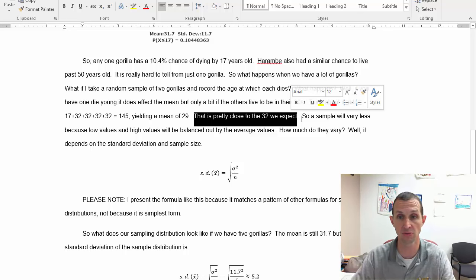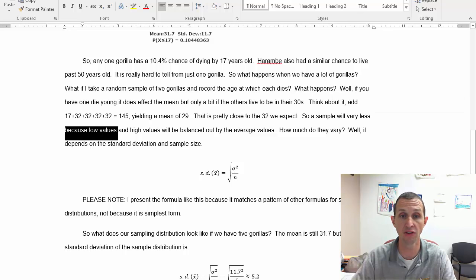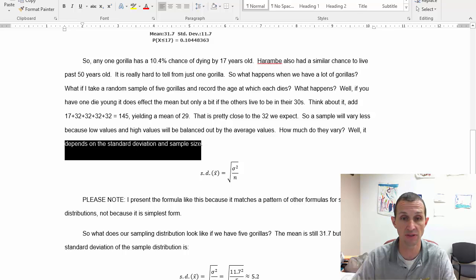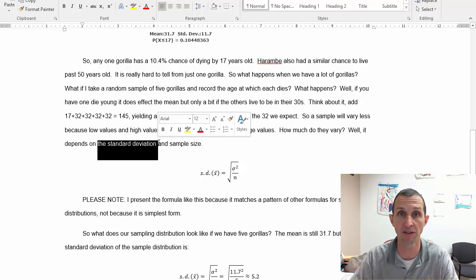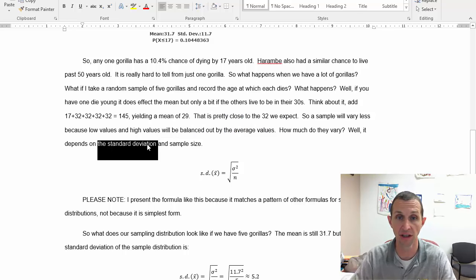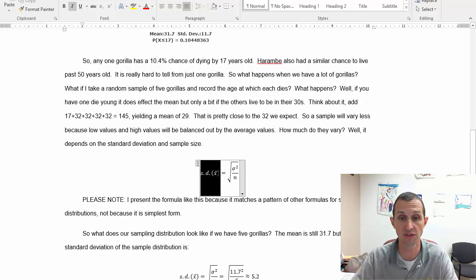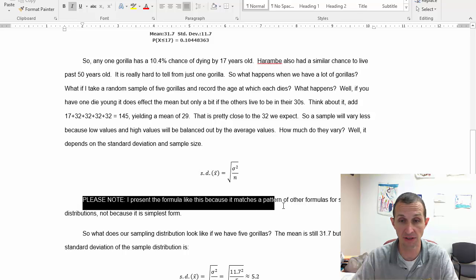This is actually what the central limit theorem is trying to tell us and what we see in sampling distributions. So a sample will vary a lot less because the low values and the high values will be balanced out by the average values. And so how much do they vary? Well it depends on the standard deviation and the sample size. The standard deviation is the amount of variability you already see in the population and then the sample size is going to reduce that variability as it goes up. So you can see here the standard deviation for sample means is going to be equal to this square root where you have the standard deviation in the numerator, as it gets bigger the standard deviation is going to get bigger, and the sample size in the bottom, as it gets bigger the variability is going to get smaller.